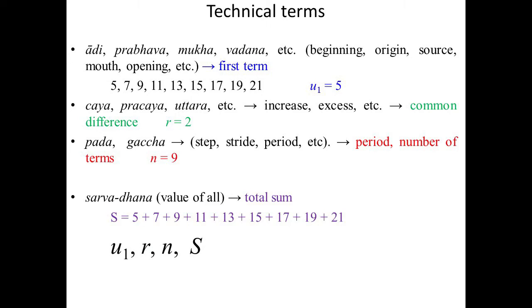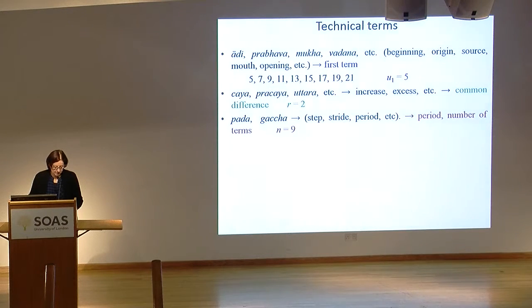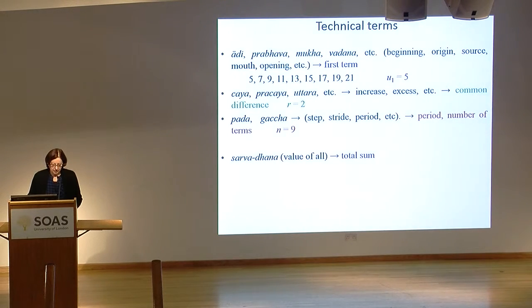So if we have to work on series, we need some technical terms. The terminology is like that. For the first term of the series, we take anything which means beginning, origin, source, etc. For the common difference, we have chaya, prachaya, uttara, or vridhi — anything which means increase or excess. The number of terms is usually pada or gacha. And we have the total sum, sarvadhana.